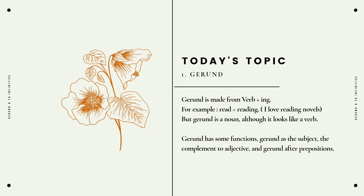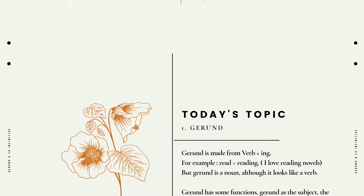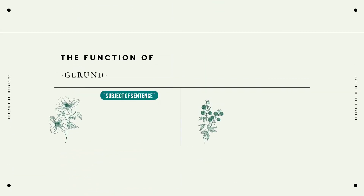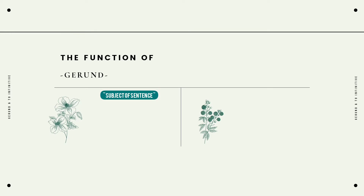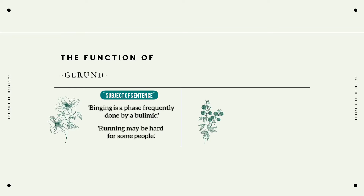Now let's move on to the functions of gerund. The first function is subject of the sentence, meaning that the gerund serves as the subject. For example: 'Binging is the past frequently taught by a polemic' and 'Running may be hard for some people.' In these two sentences, 'binging' and 'running' are the subjects.